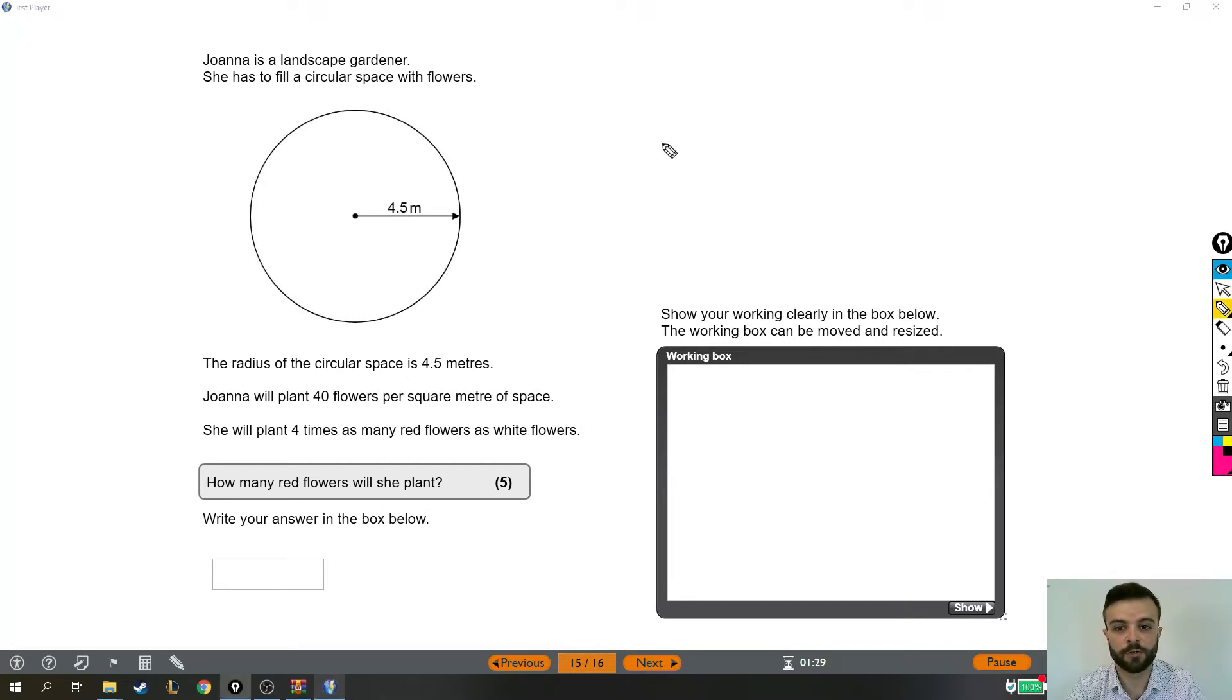Okay, so this one we have a circle and we're going to need to remember one of those circle formulas that you need for level 2 functional skills, but we'll come to that in a minute. Let's give it a read-through. Joanna is a landscape gardener. She has to fill a circular space with flowers.